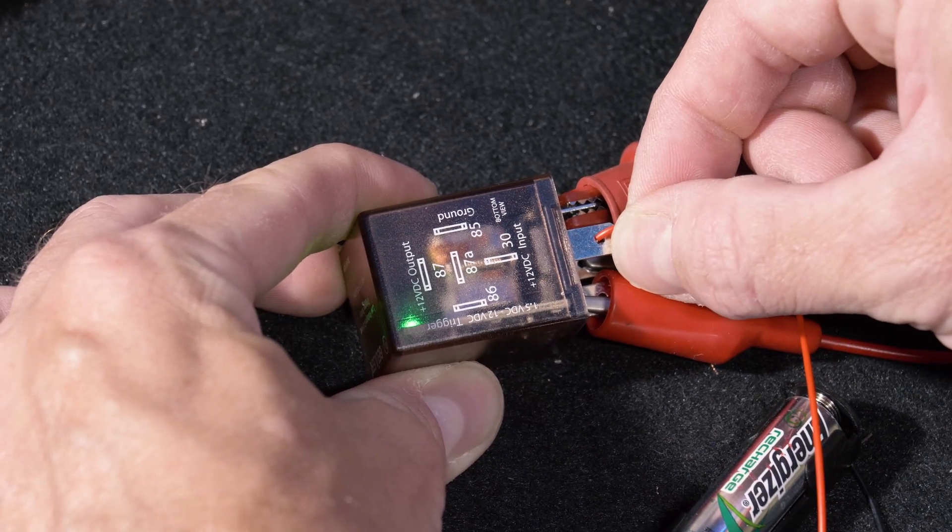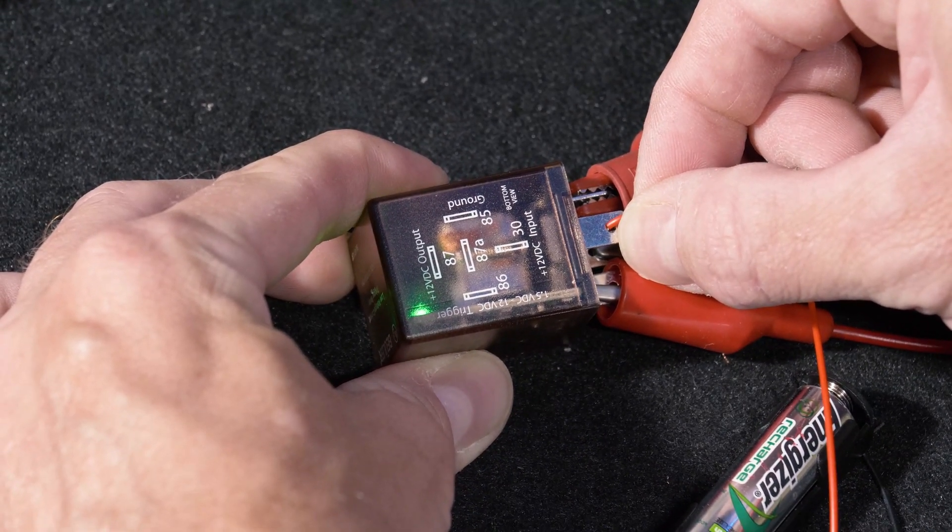Using this relay, you can now just wire up 12 volts to the relay and use a low voltage signal to trigger it.